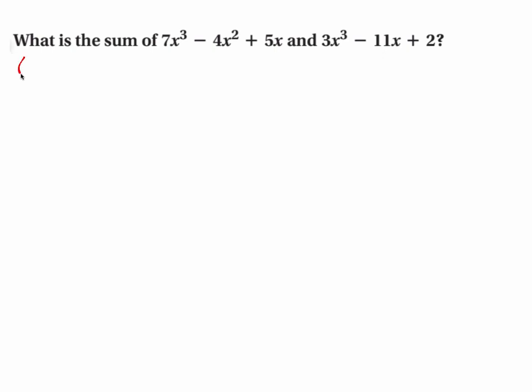One, you can write this as 7x³ - 4x² + 5x + 3x³ - 11x + 2. And because we're adding, we don't have any sign changes. And then go through and collect coefficients of the same power.